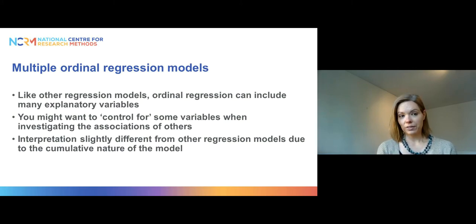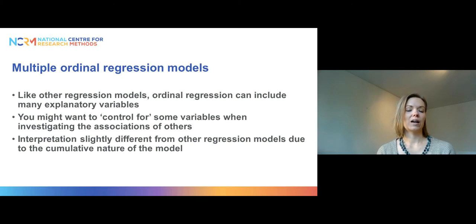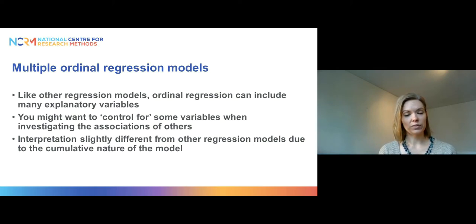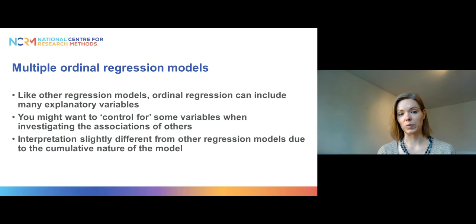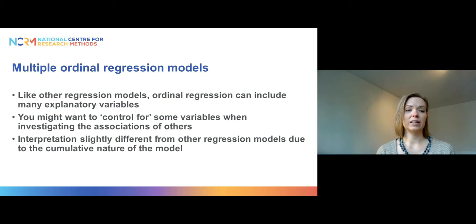Like any other regression model, these ordinal models can include more than one explanatory variable. In the first video we only included one variable to show a simple example, but in real life you would normally have more than one variable in your model, usually because you want to control for some variables while investigating the associations of others.